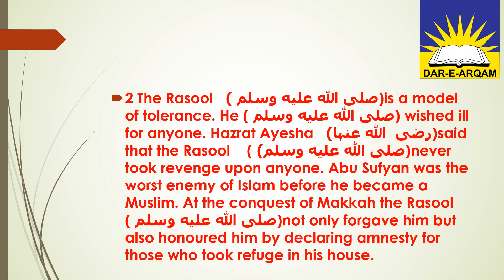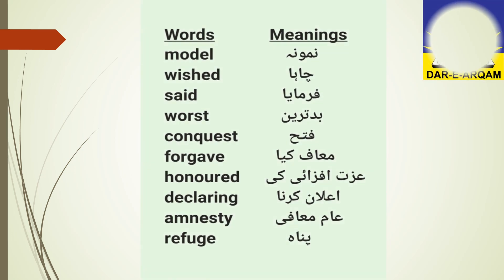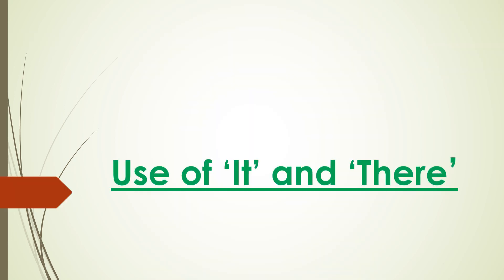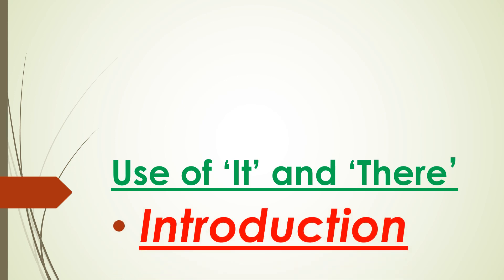So this is the second paragraph and here are the meanings of this paragraph. You have to write this also in your book and learn it. Now we have to do something from English — we will do use of 'it' and 'there' and shall do the introduction of 'it' and 'there.'